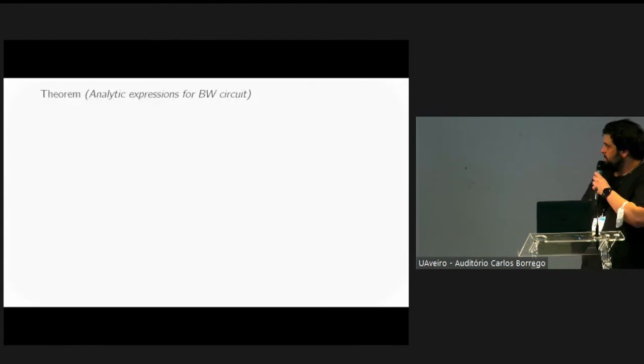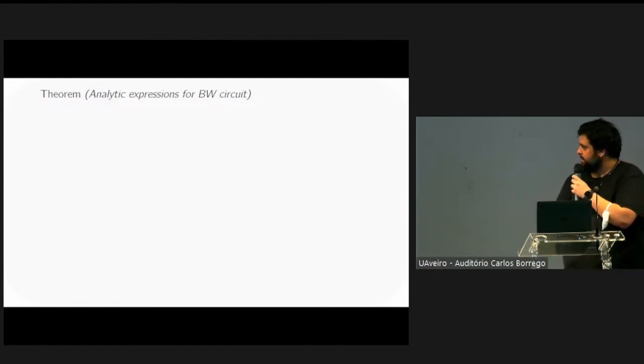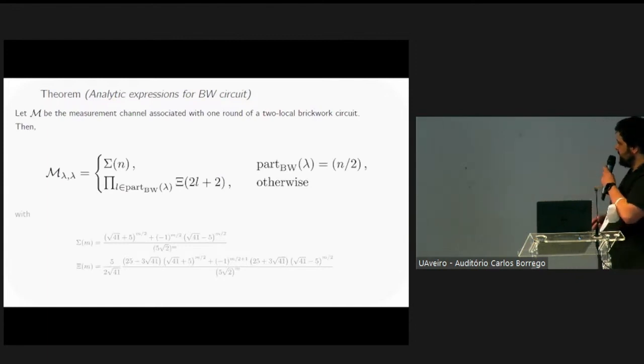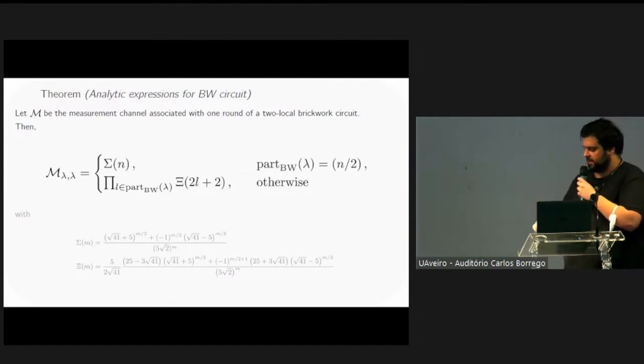Then we can move to our main results, which are analytic expressions associated to such circuits. They are basically obtained by reducing the tensor network to systems of recurrence relations. In particular, we obtain this expression where each diagonal element of the measurement channel is determined by the structure of the partition of the circuit. Here we have these two functions σ and ψ which can be evaluated exactly, and you can see the exact formulas in the bottom part.